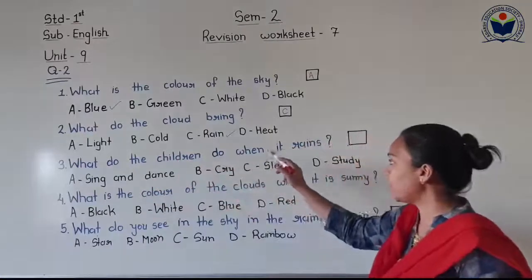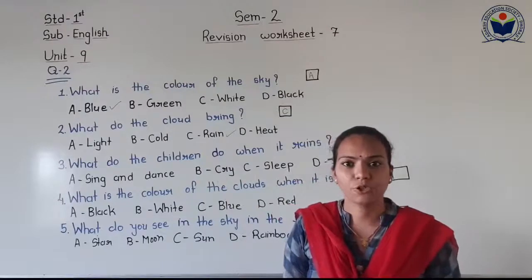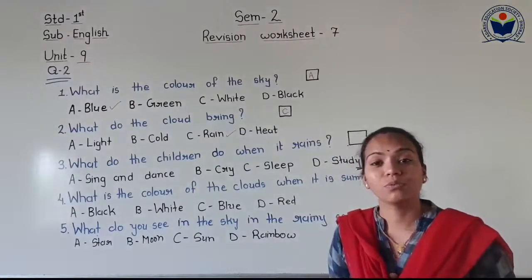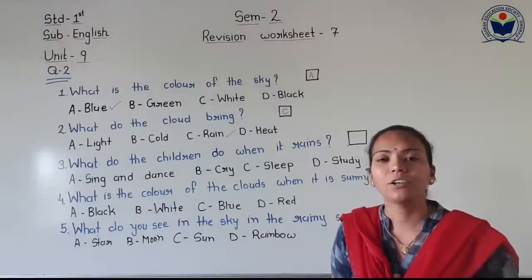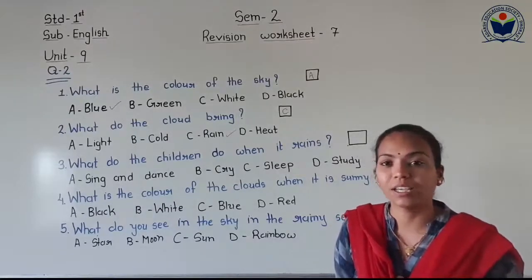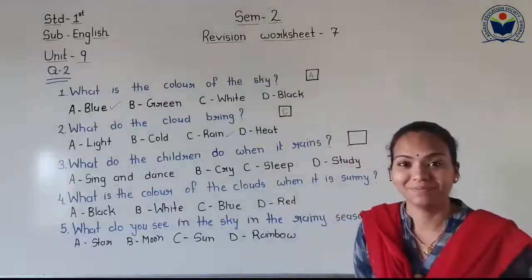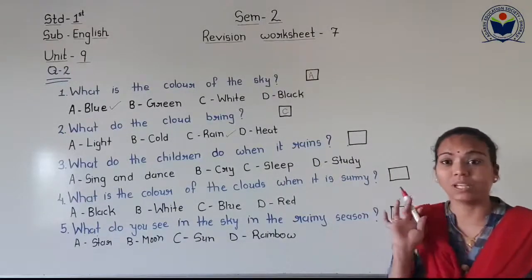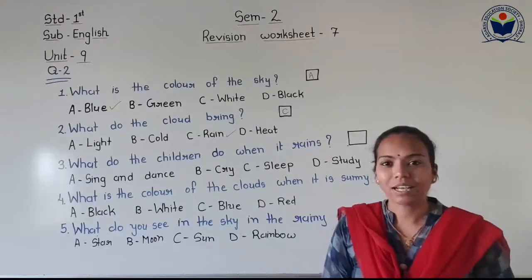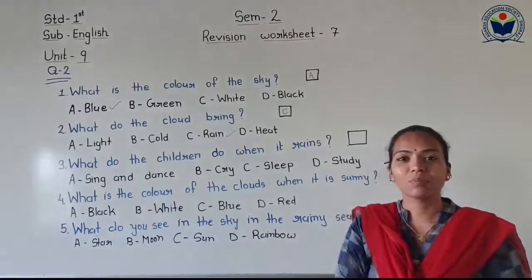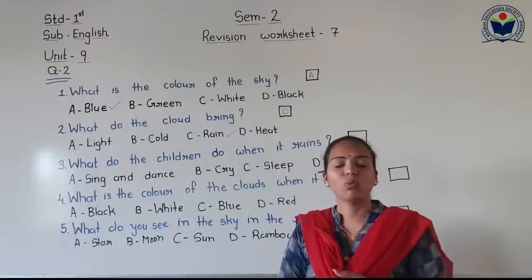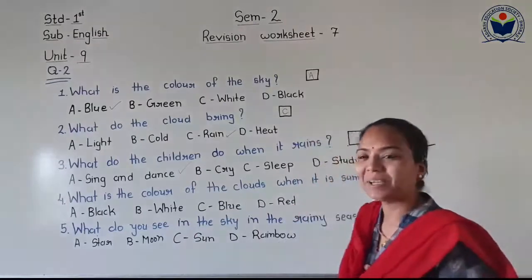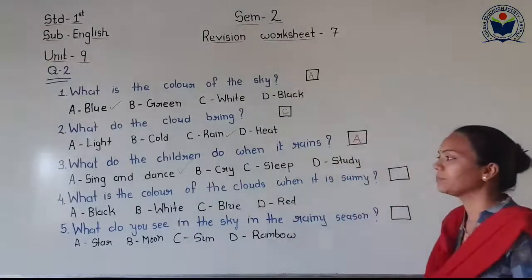Now number 3: What do the children do when it rains? We need to read all the options to find the right answer. Option A is sleep and dance, option B is ride, option C is sleep, option D is travel. Most children like to sing and dance in the rain — what a great feeling! So please write option A and put a tick mark on option A.